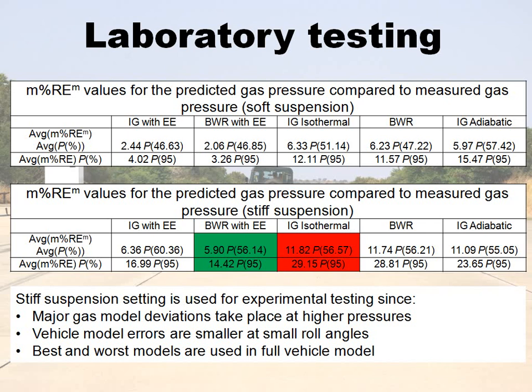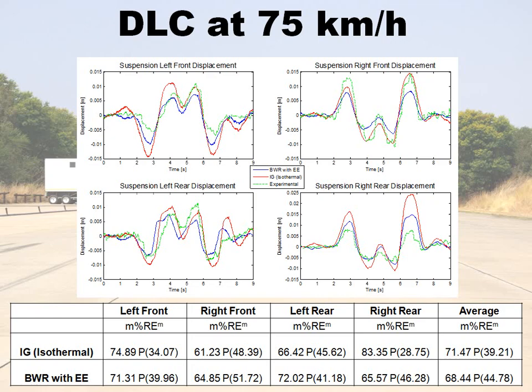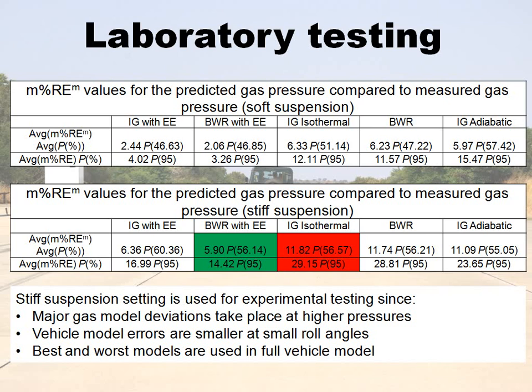I then implemented these models in a full vehicle model to compare with full vehicle results. To reduce errors from the vehicle model itself — since we are focusing on the suspension model — we used the stiff suspension configuration, which gives lower roll angles and fewer vehicle model errors. We also see higher pressures in this configuration, which is where the models start to deviate from actual results, making it a better area to assess gas model accuracy. I then compared the best and worst models against each other.